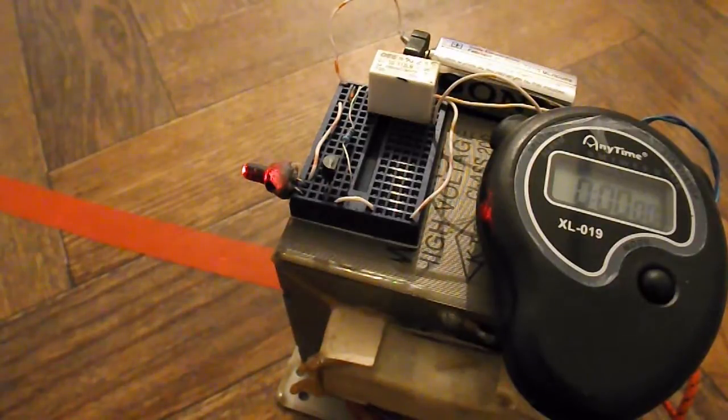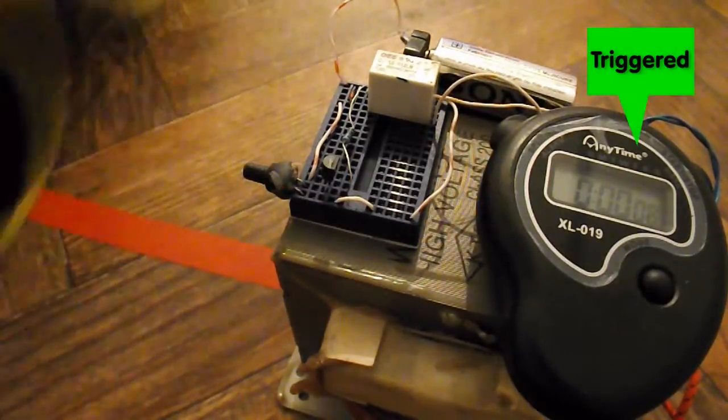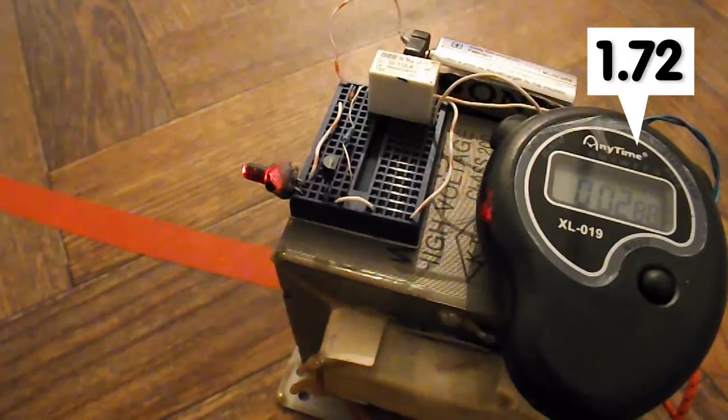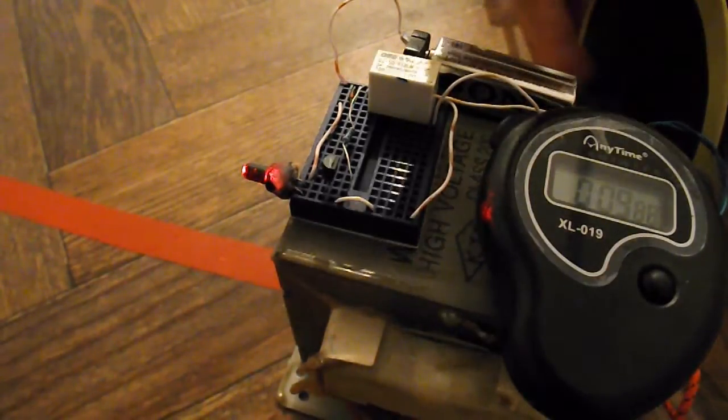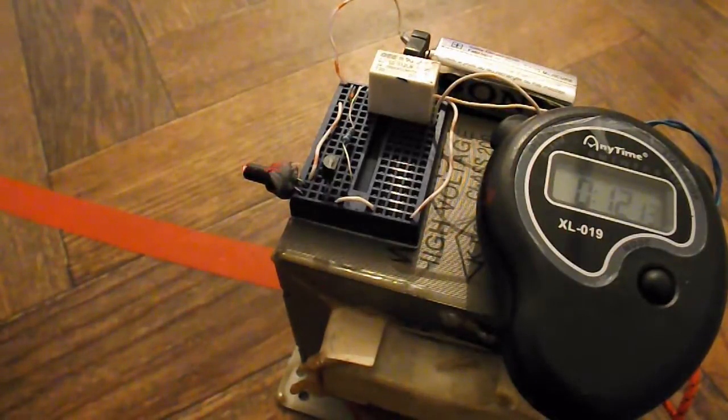It should trigger the laser as we go past, trigger the timer, and then it should stop it again when it gets to the other end. So let's see. Well, it did work, except that when it rolled back through afterwards, it triggered it again. So I'm going to have to do something to stop it rolling back.